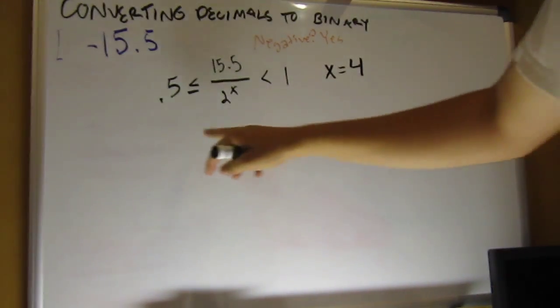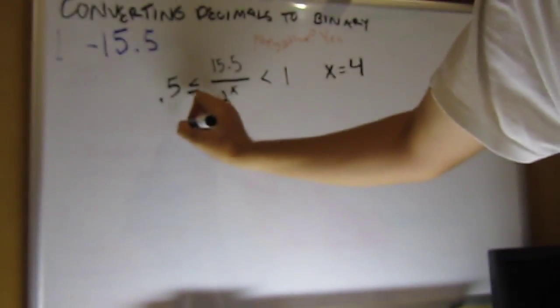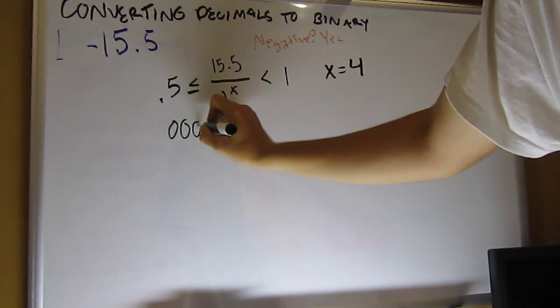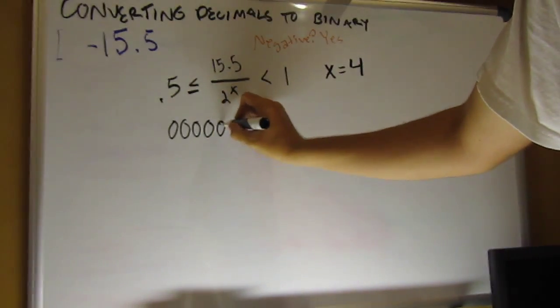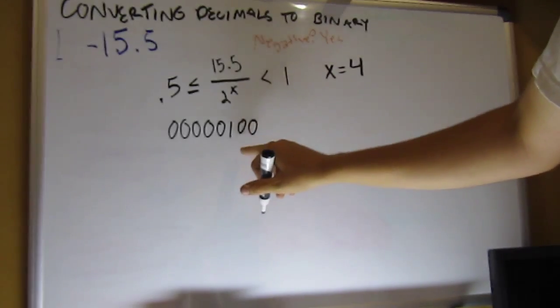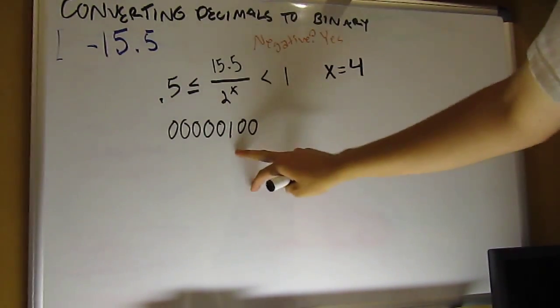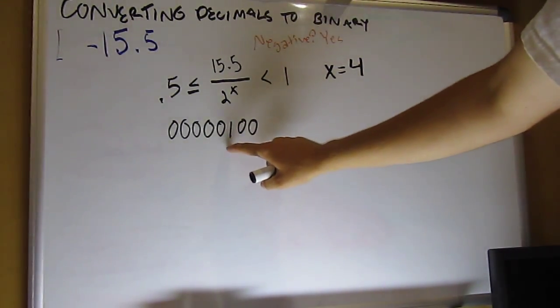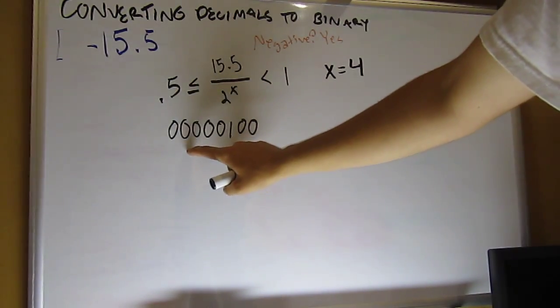So now we have to store this into an 8-bit word. So we have 00000100, and these are the values here. So 1, 2, 4, 8, 16, 32, 64, 128.